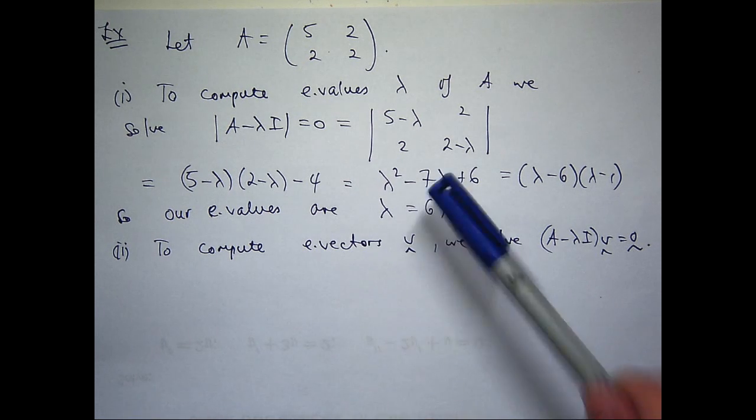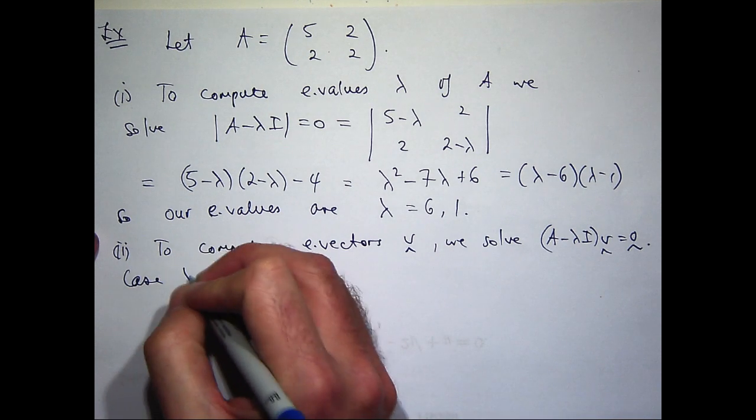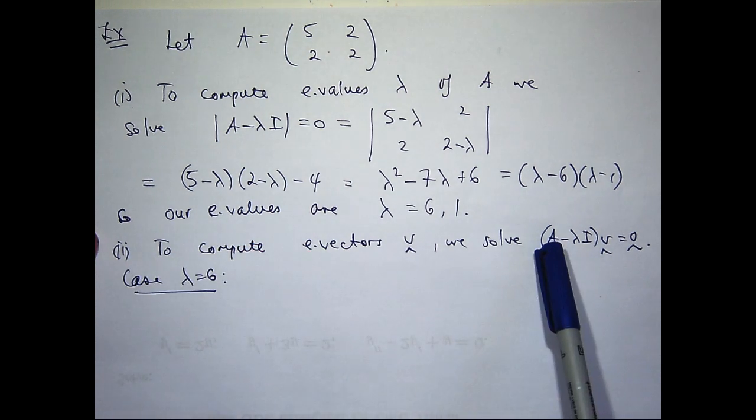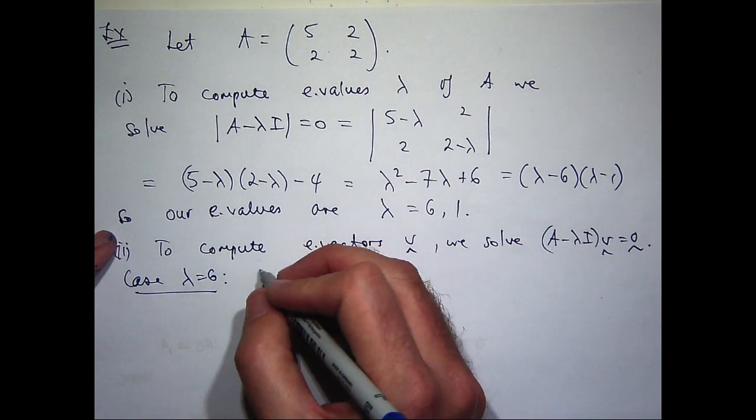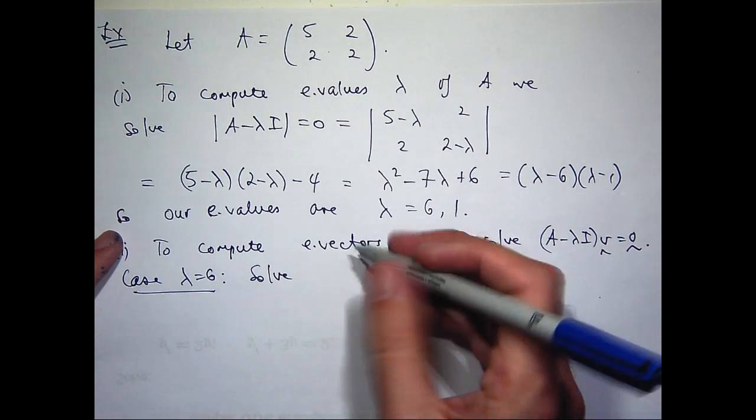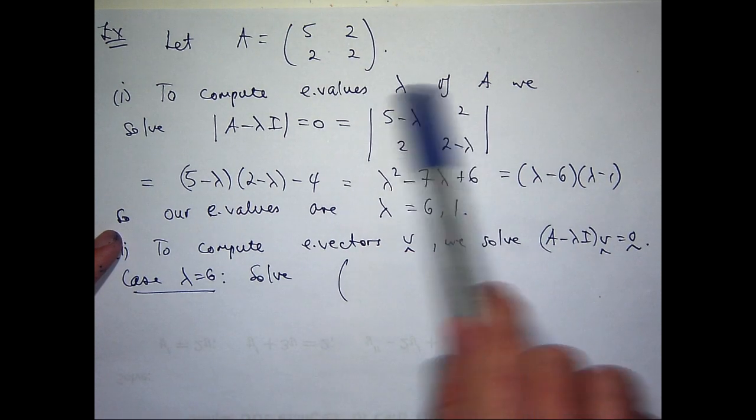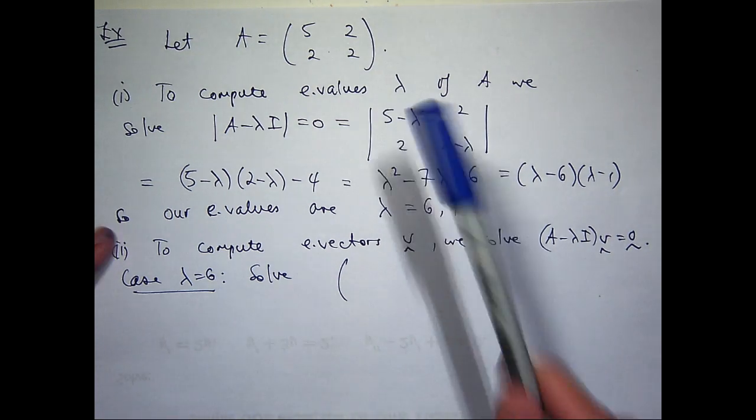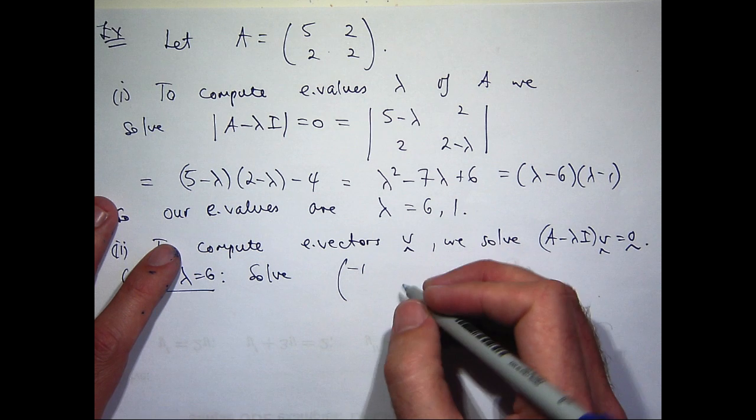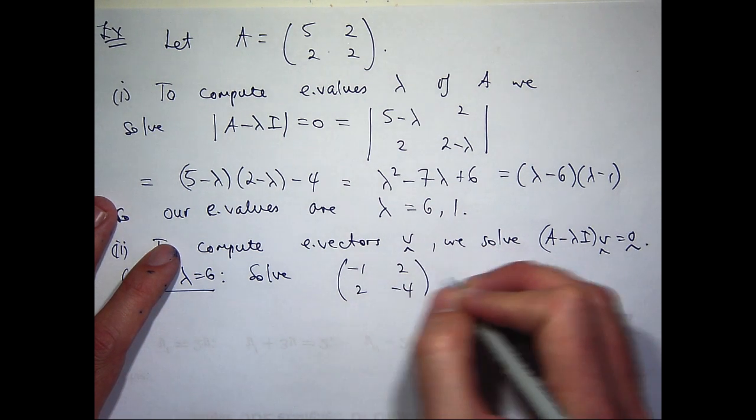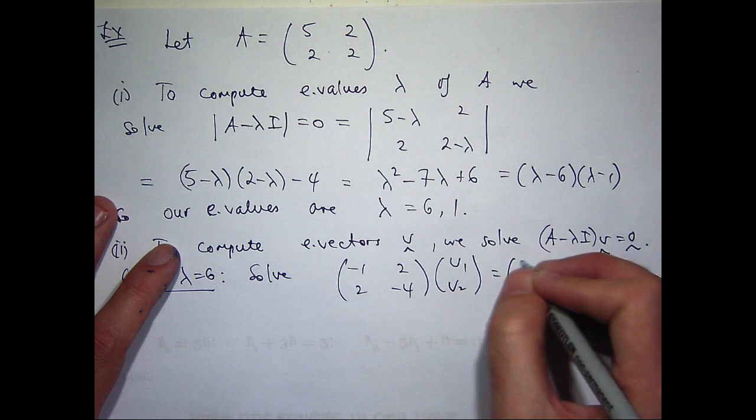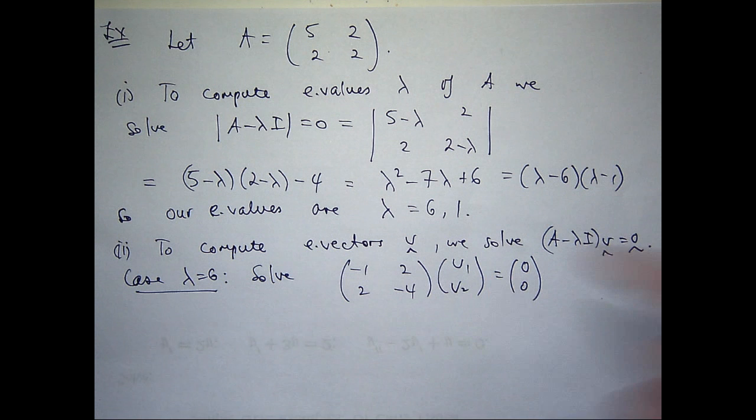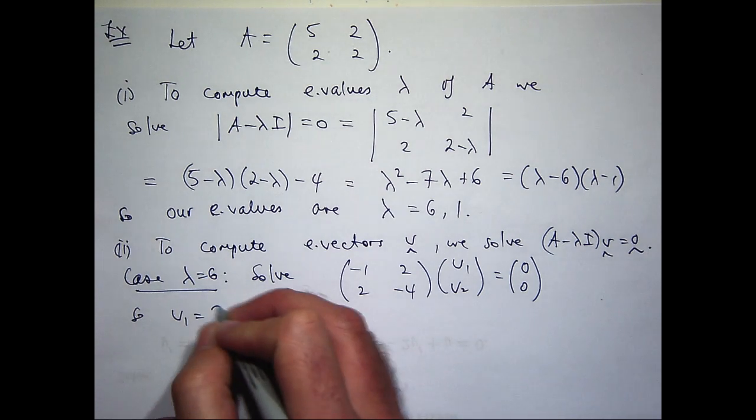So let's just do the case, say, lambda equals six. This will be A minus 6I times v equals the zero vector. So if I replace lambda with six in there, I can form my coefficient matrix. So it will be minus 1, minus 4 down the diagonal, and 2 is everywhere else. So you see I've got two equations there that basically say the same thing. So v1 from the first row, v1 is going to be 2v2.